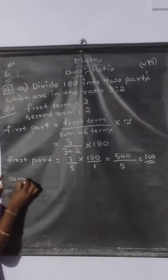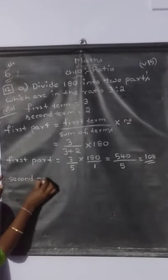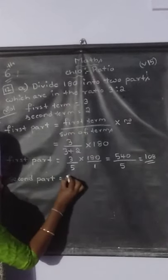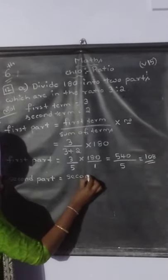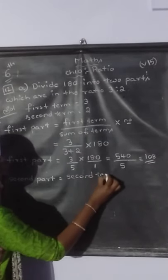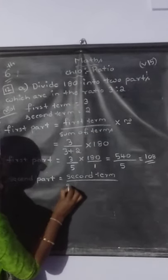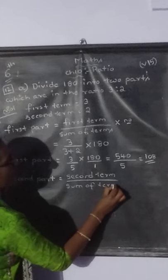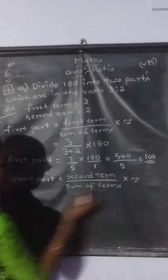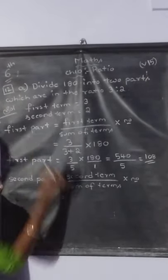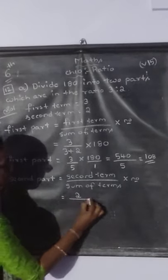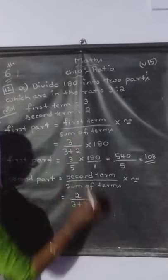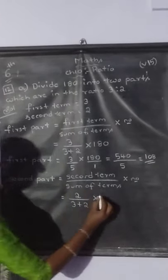What is the second part? Both parts have been asked. For the second part, same formula — but instead of the first term, substitute the second term. The formula for the second part is: second term by sum of the terms, into the number. Second term is 2, divided by 3 plus 2, into 180.